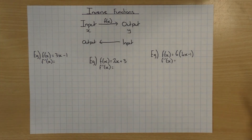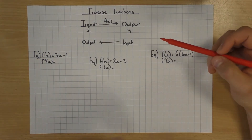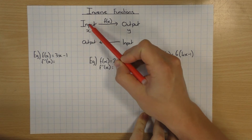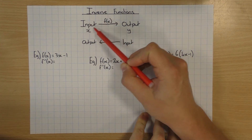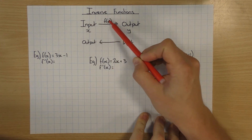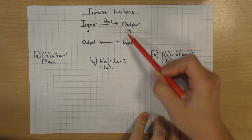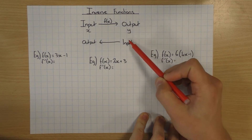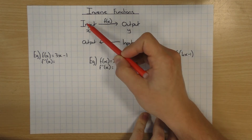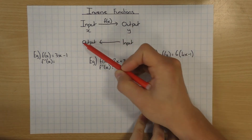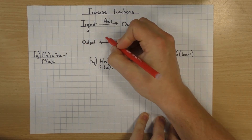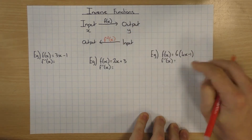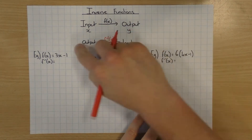With inverse functions, as you might have guessed, it's just going backwards. Before in part 1, we talked about a function: you input something — say x — into the function, and you get the output y. So the inverse function is going the other way. The output becomes the input and the input becomes the output, because you're going backwards. We use the notation f to the power of minus 1 of x to represent the inverse.